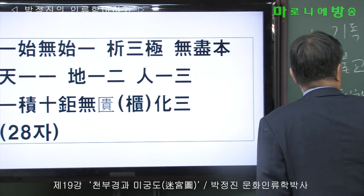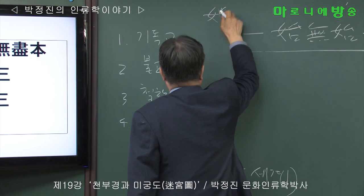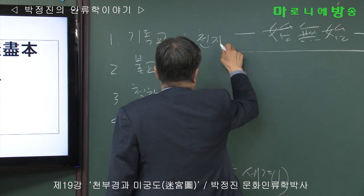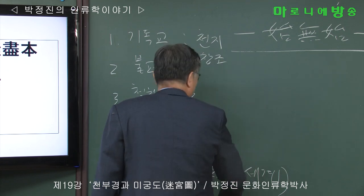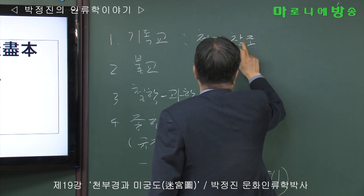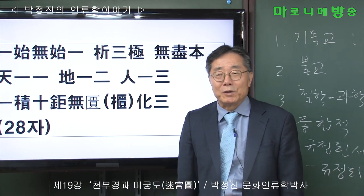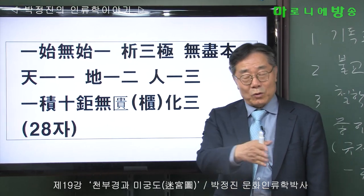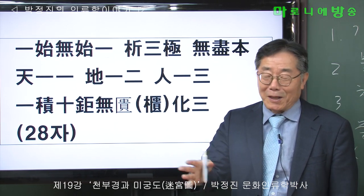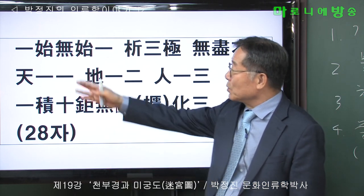기독교적 관점에서 보면 일시는 천지의 창조입니다. 시작이 있는 것이죠. 기독교 경전은 천지가 창조되었고, 그 다음에 아담을 만들고 이브를 만들고, 선악과 문제가 나오는 것처럼 창조로부터 계속 이어지는 것입니다. 그런데 천부경은 일시 해놓고 무시일이 들어가 있죠.